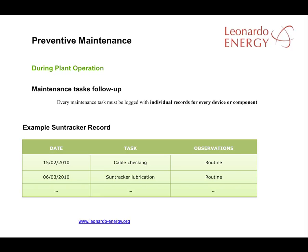Follow-up checks on all preventive maintenance tasks in the program are important, with individual records for each task classified by component. In the example of a sun tracker record, completion dates for each task and whether the task was routine or a response to an incident are included, together with observations on the detection of any malfunction.